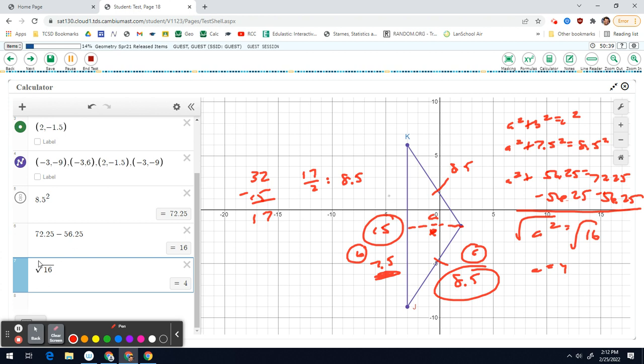That means that this point must be 4 away from this vertical line, which is at negative 3. So we count 4 to the right from negative 3: 1, 2, 3, 4. That would be the point of 1, negative 1.5. We could also go 1, 2, 3, 4 to the left at negative 7, negative 1.5.